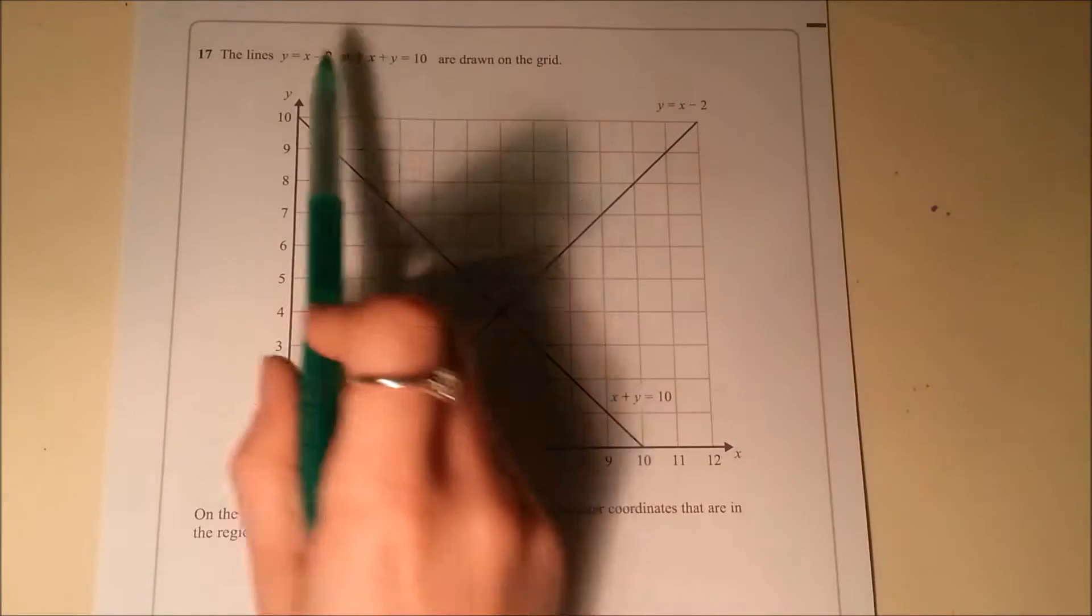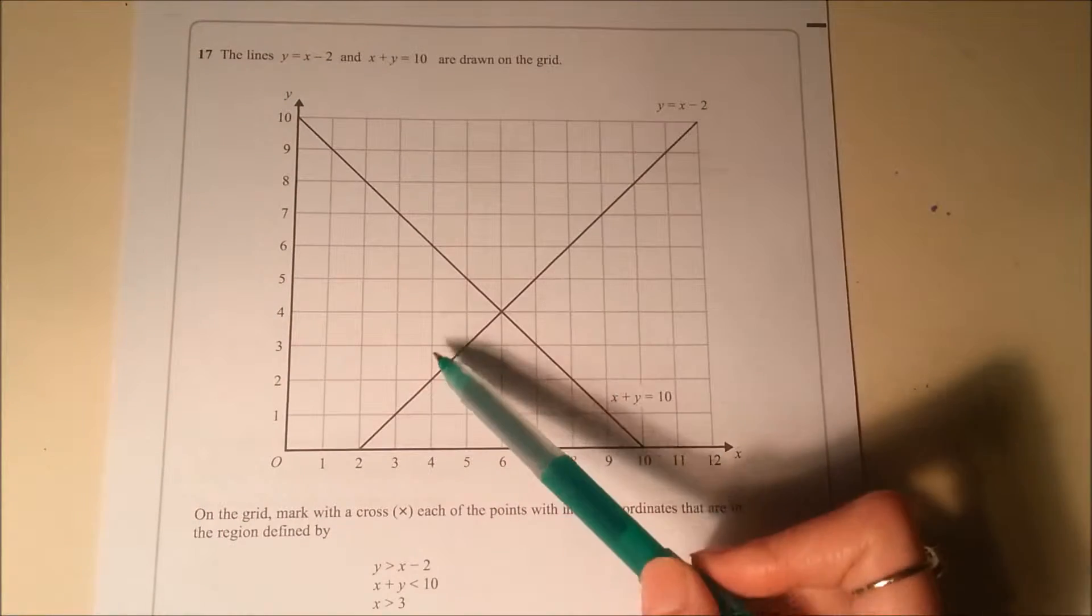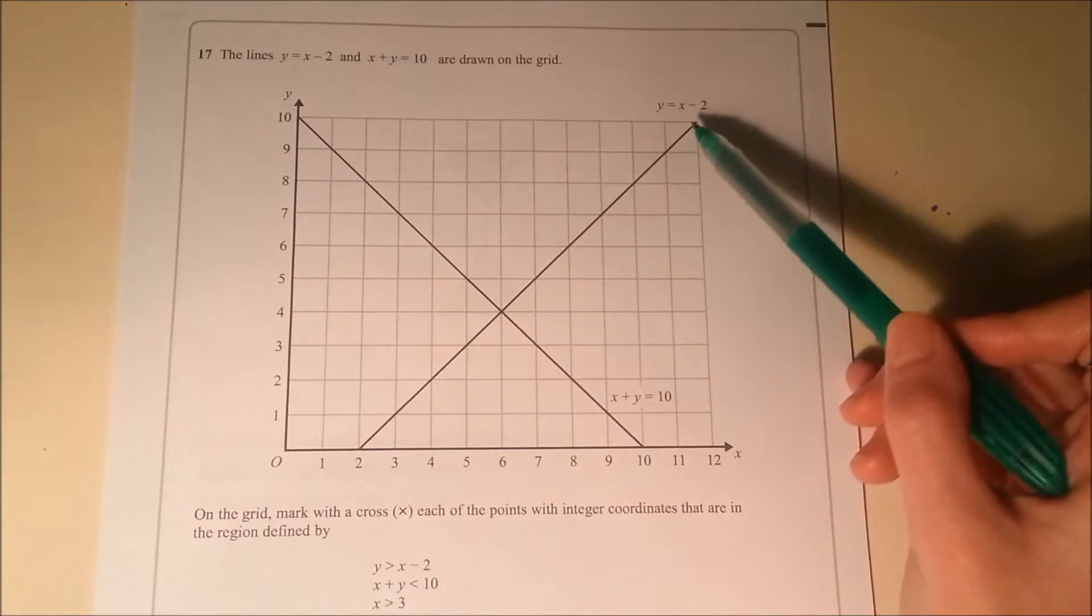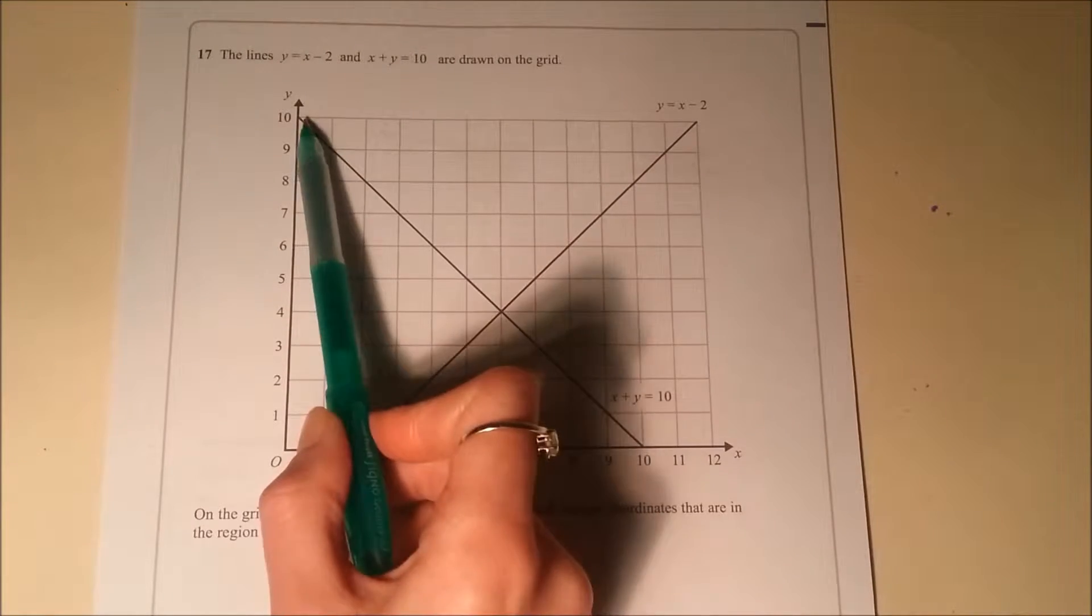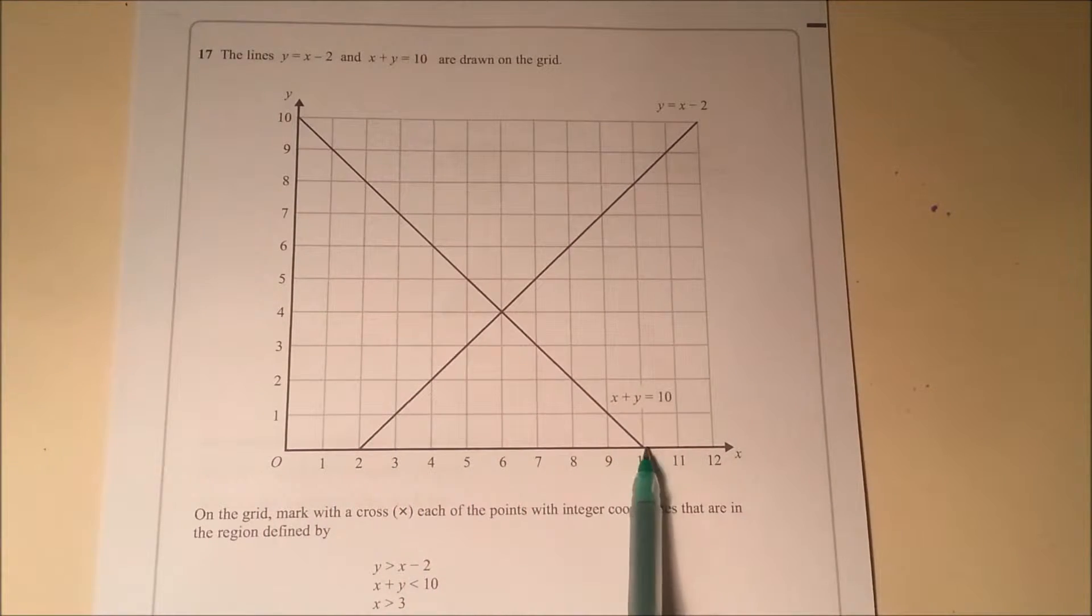Okay, question 17. We've got the lines y is x minus 2, so that's this line here, and y plus x equals 10, that's this line here drawn on the grid.